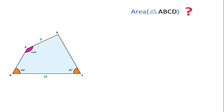Welcome to Definite Mind. In this question there is a quadrilateral ABCD. Angle D is 60°, angle A is 150°, angle C is 60°, the length of CD is 18 units, and the length of AB is 9 units. We have to find the area of quadrilateral ABCD.